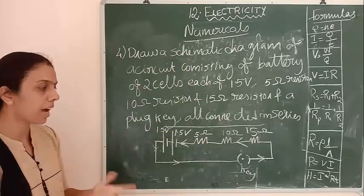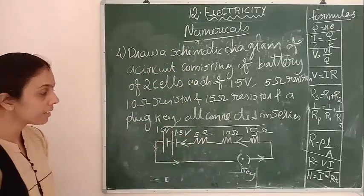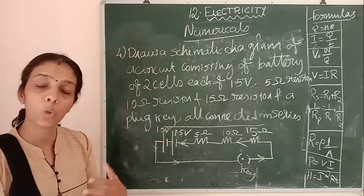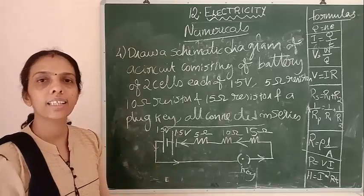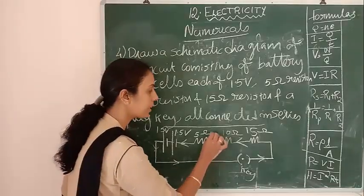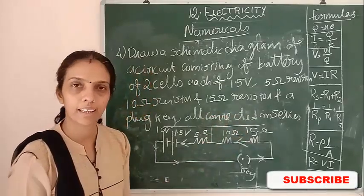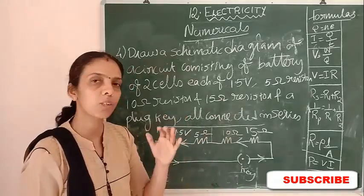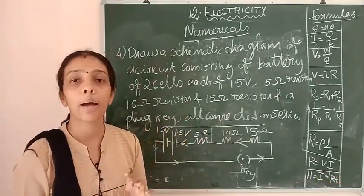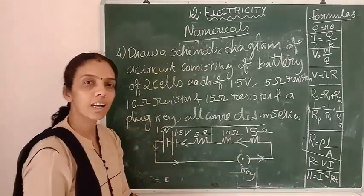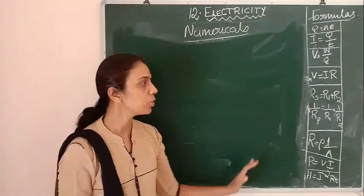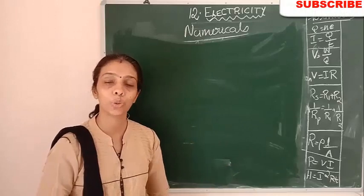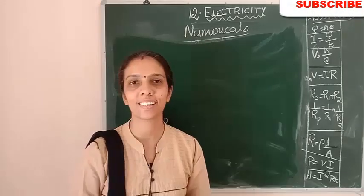If a voltmeter is connected in parallel with a resistor — for example, in parallel with the 10 ohm resistor — you can connect one voltmeter as well, since a voltmeter is always connected in parallel with the circuit. This question does not include that, but if it is given, you can draw it accordingly. So all these numericals are done. In the next videos, we will show you how to do the rest of the numericals. Thank you.